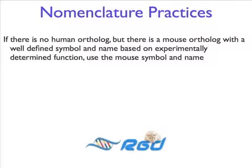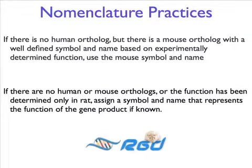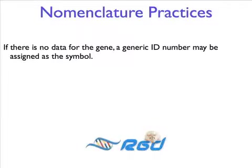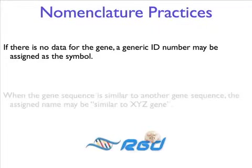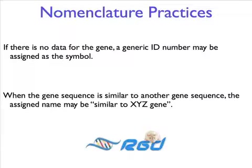If there is no human ortholog but there is a mouse ortholog, the identical name and symbol is assigned to the rat gene. If there is no human or mouse ortholog, the name that represents the function of that gene product is assigned. If there is no data for the gene, a generic ID number may be assigned as the symbol. When the gene sequence is similar to another gene sequence, the assigned name may be 'similar to XYZ gene.'